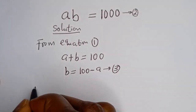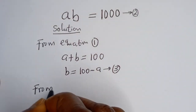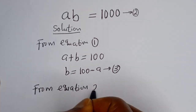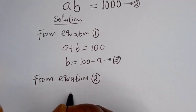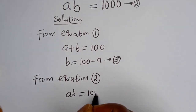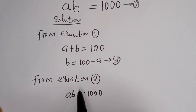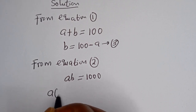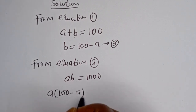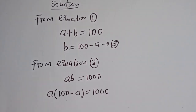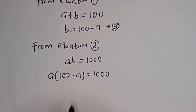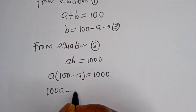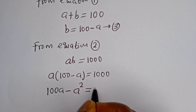Also from equation 2, AB is equal to 1,000. We can then substitute for B. When B is equal to 100 minus A, we have A times (100 minus A) is equal to 1,000. Let's open the bracket: A multiplied by 100 gives 100A, minus A multiplied by A gives A squared. So 100A minus A squared is equal to 1,000.